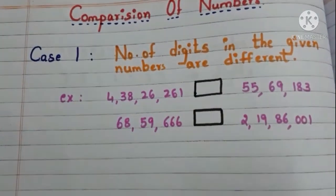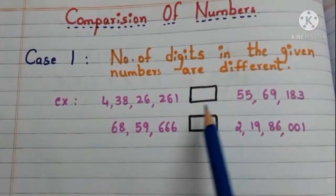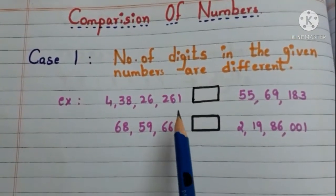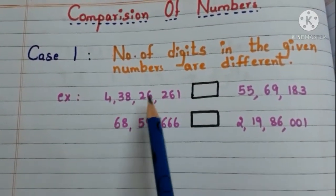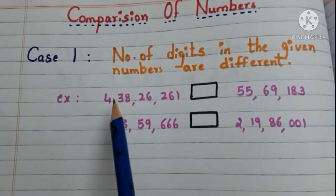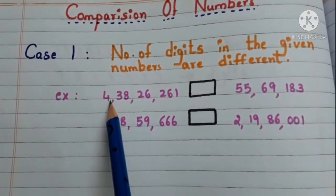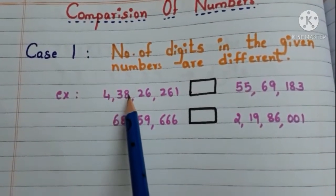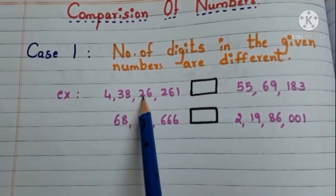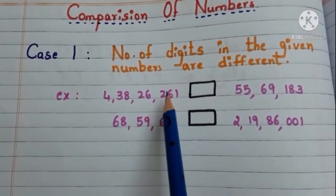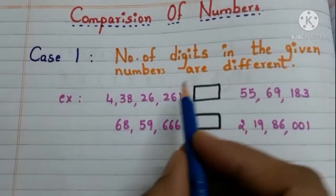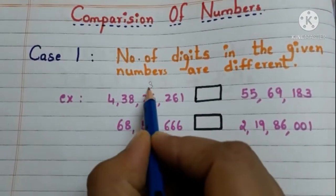Here we have examples. First, let us count how many digits are there in this number. 1, 2, 3, 4, 5, 6, 7, 8. 8 digits, right?